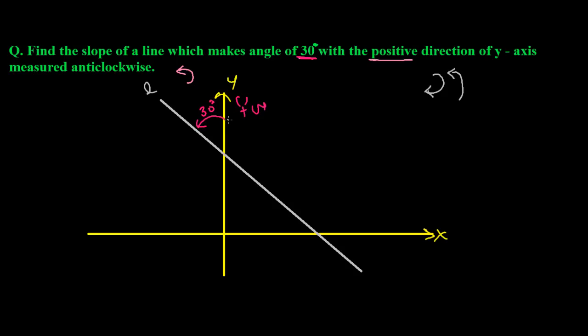So now we need to find the slope of this. What is the slope? Slope means m, which is actually the tangent of the angle made by this line. If the angle made by this is θ, then we need to find tan θ.